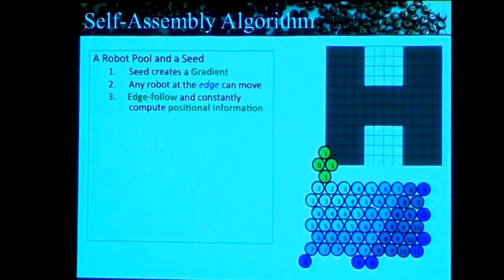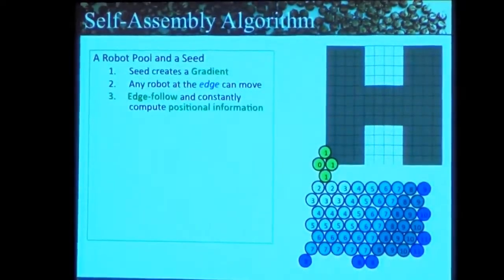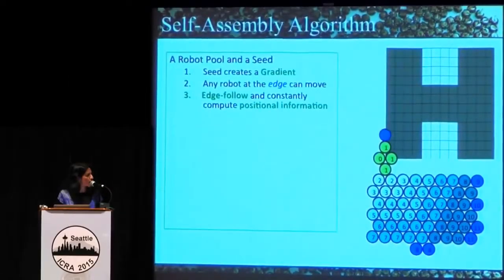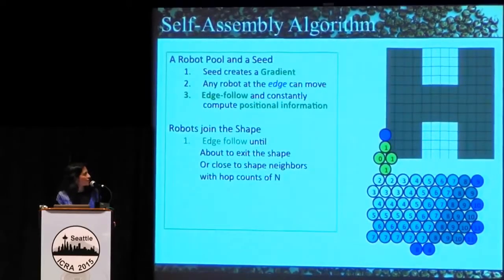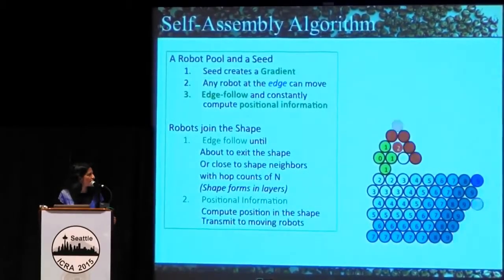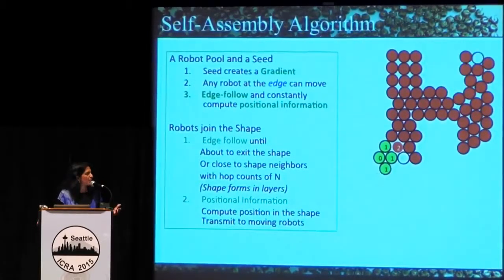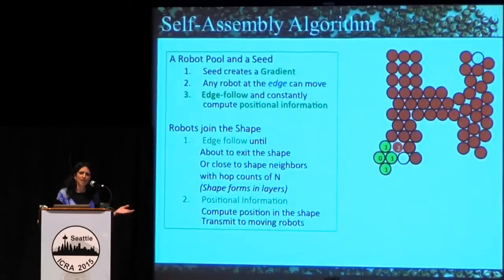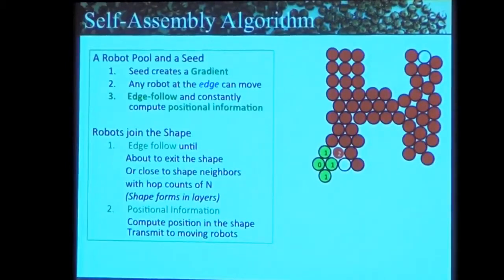Our current self-assembly algorithm works like this: we have a seed — an originating point — and robots from a pool of unused robots climb along a gradient to basically enter a shape. They edge-follow until they enter the shape, then find a place in the shape where they can attach. All of the robots are looking for work, and when they find a place where they can do their work of being part of the shape, they stick. Eventually all the robots dissolve into position and you get this large shape. Every time you do the shape it's slightly different because the robots never do things exactly the same, so algorithms must work with variation and noise.